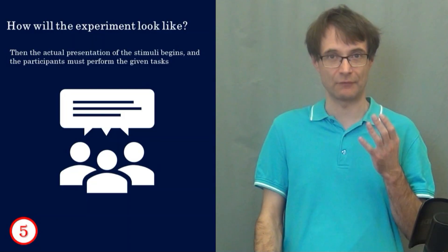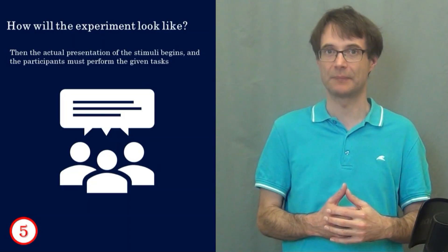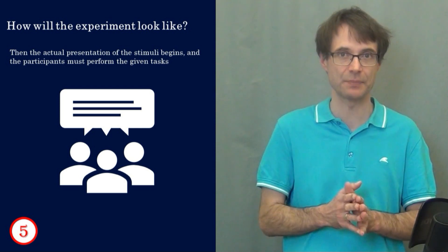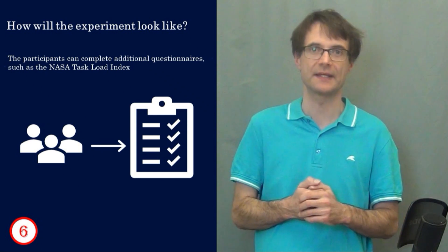Before the subjects eye movements are recorded the eye tracking device has to be calibrated. And this can be done several times during the experiment. Then in the fifth step the presentation of the stimuli begins and the participants perform their tasks. Several task blocks are performed in the experiment.